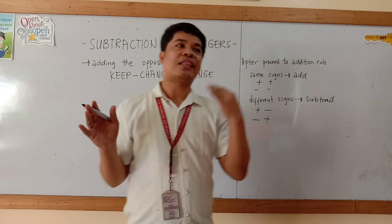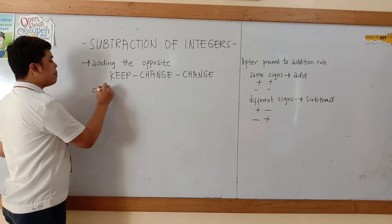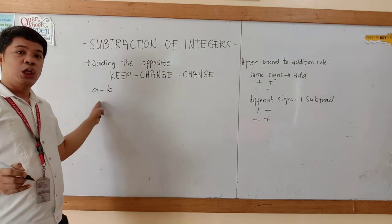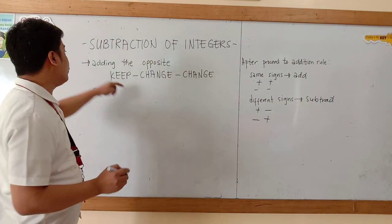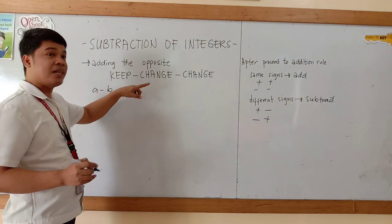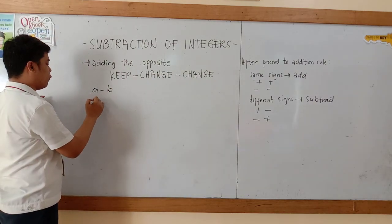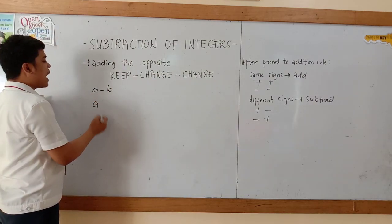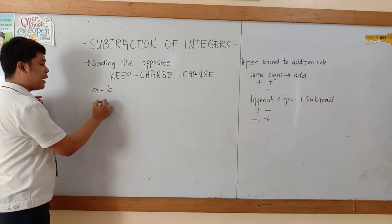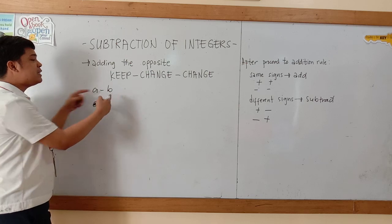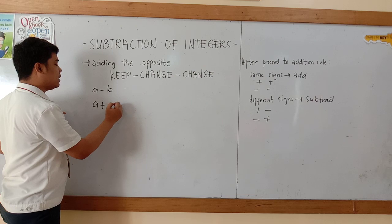Let us now solve, Maka Friendships: A minus B. According to the technique or method, we need to apply keep, change, change. So this letter A, we need to keep this — therefore that will be A. And then this one is change, change, so it becomes plus. And then this letter B, which is positive B, so this becomes negative B.